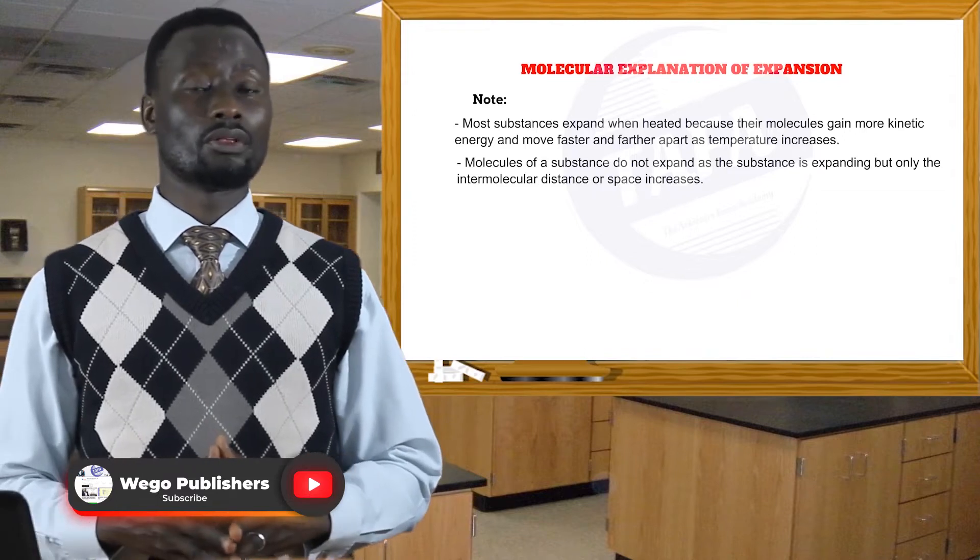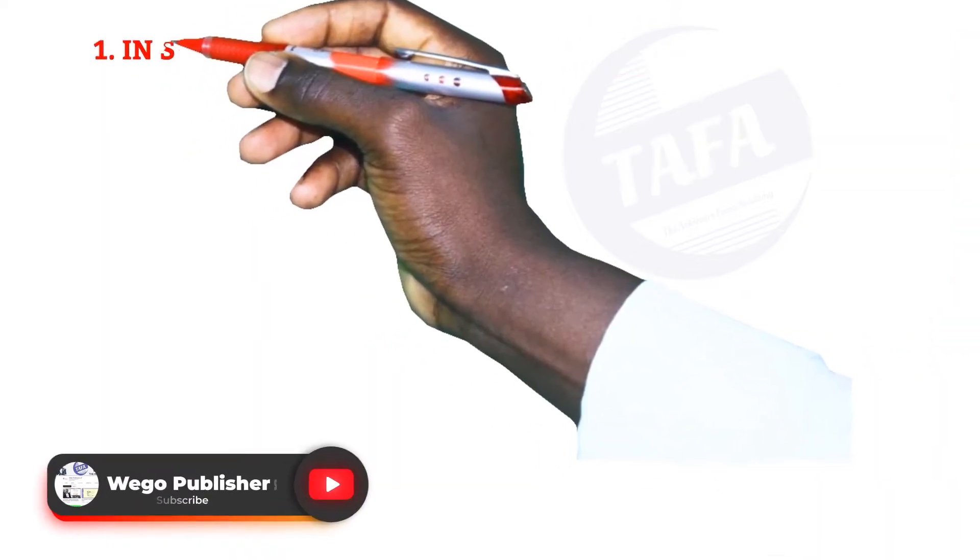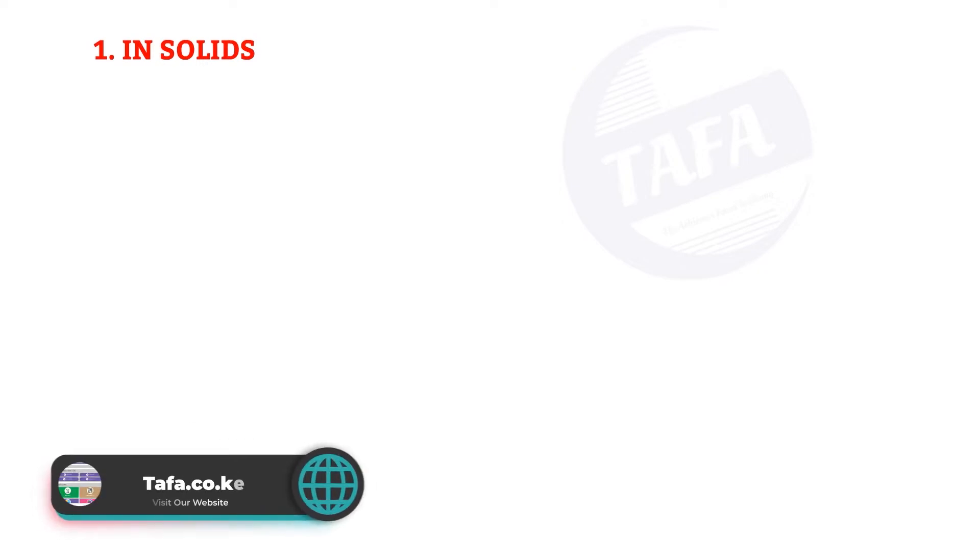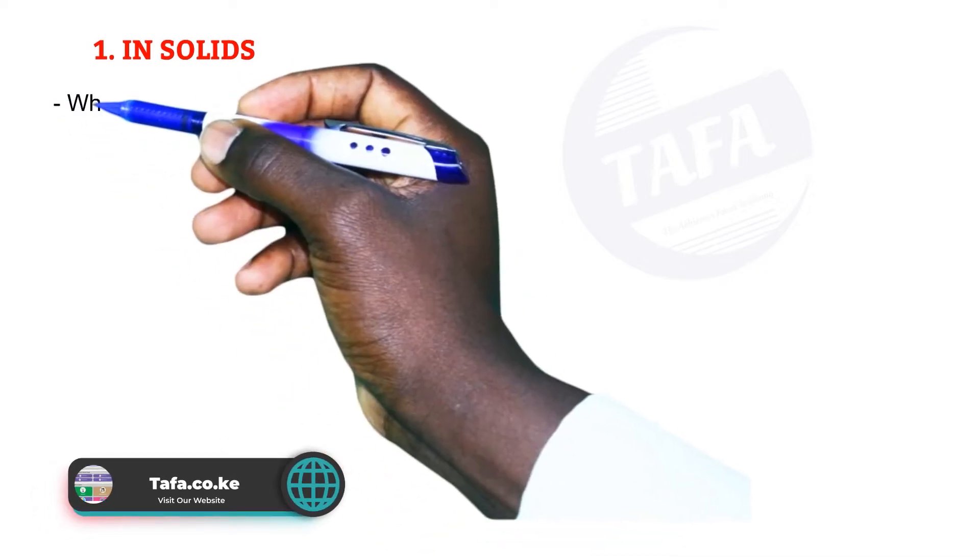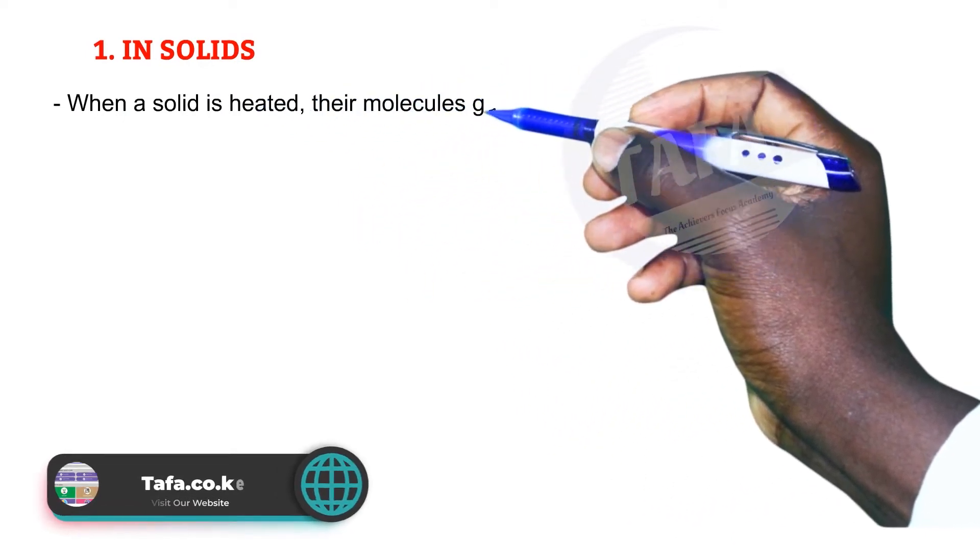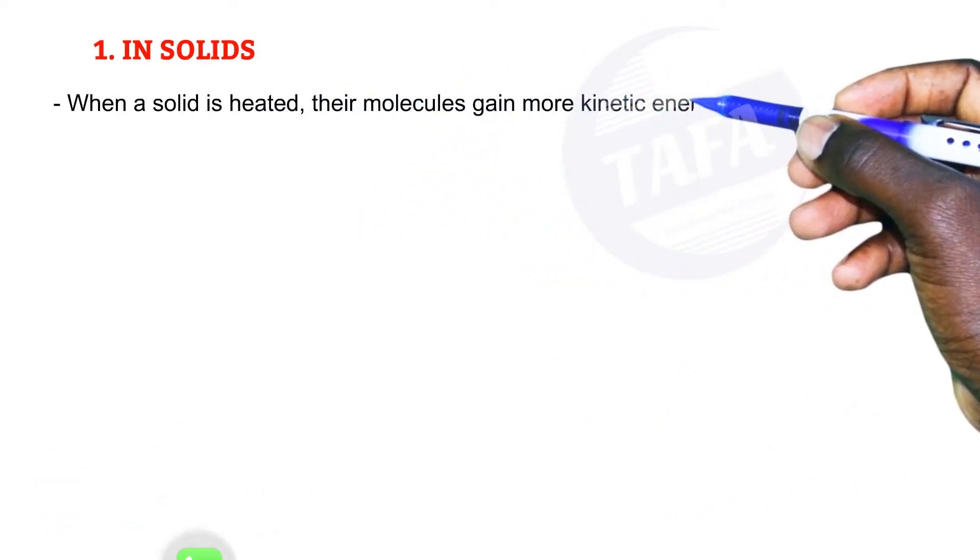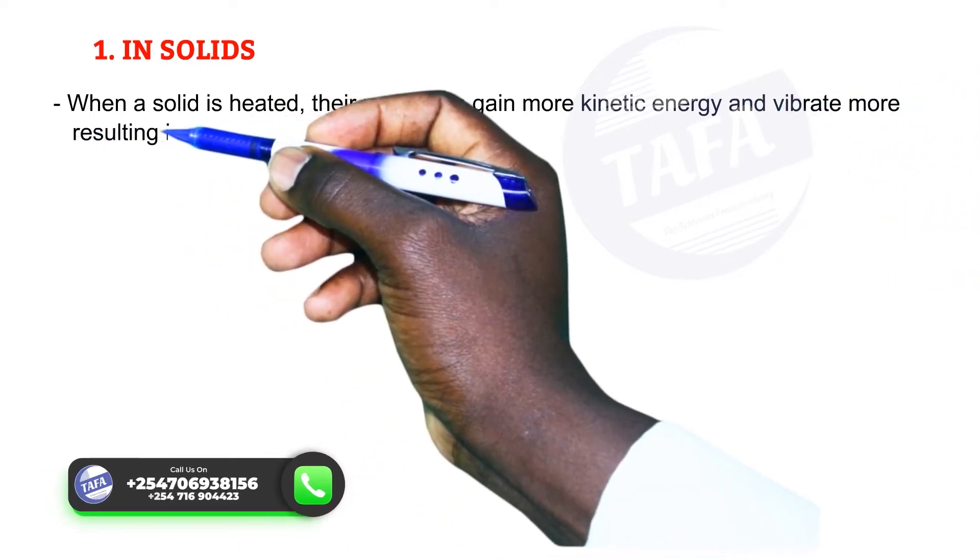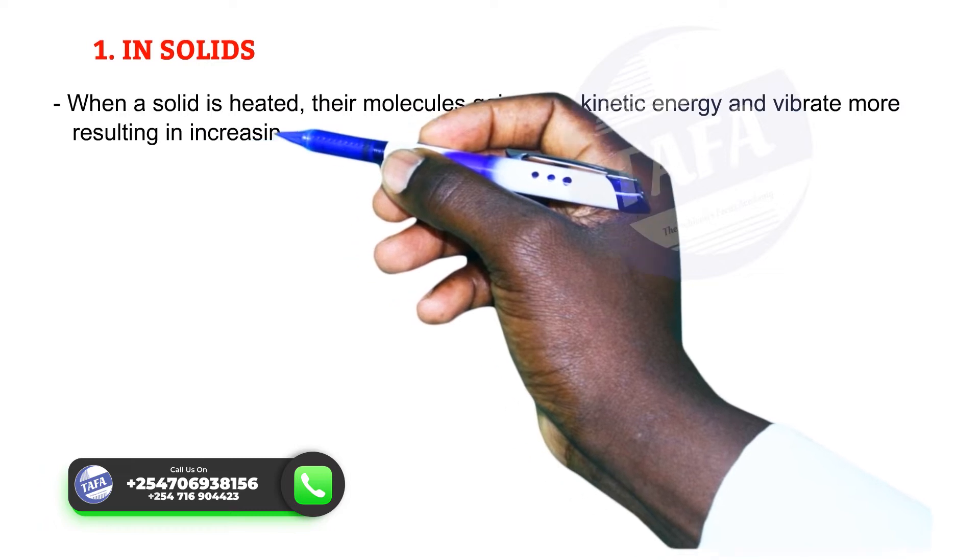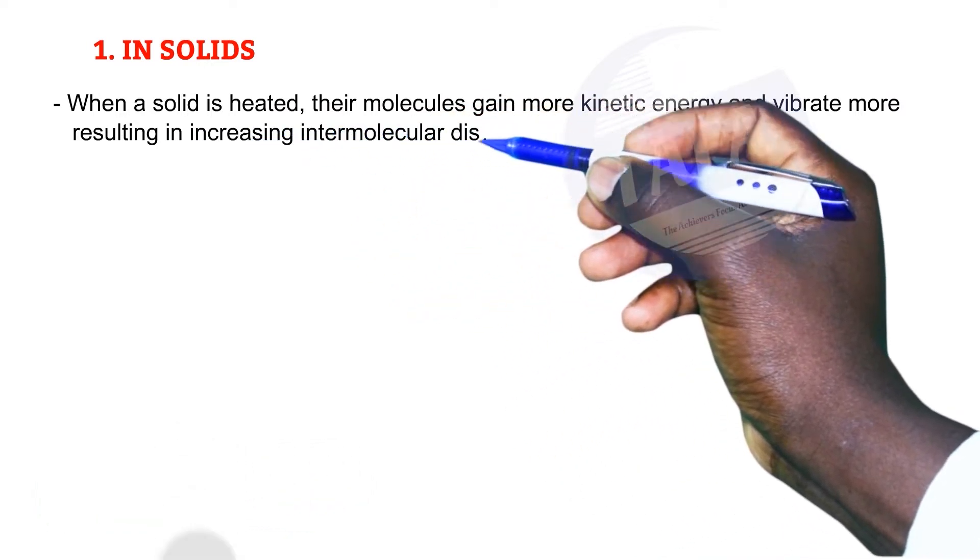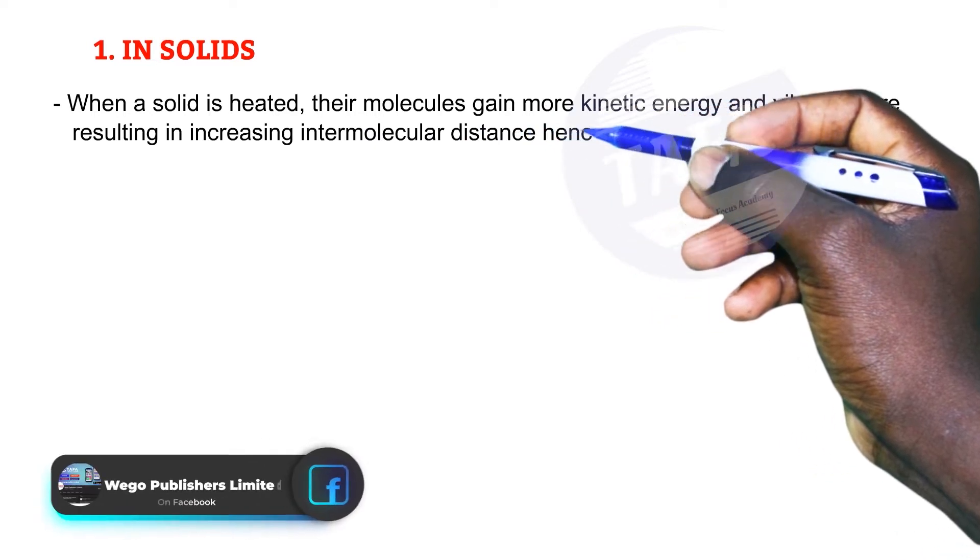We will begin with solids. In solids, when a solid is heated, their molecules gain more kinetic energy and vibrate more, resulting in increasing intermolecular distance or space.